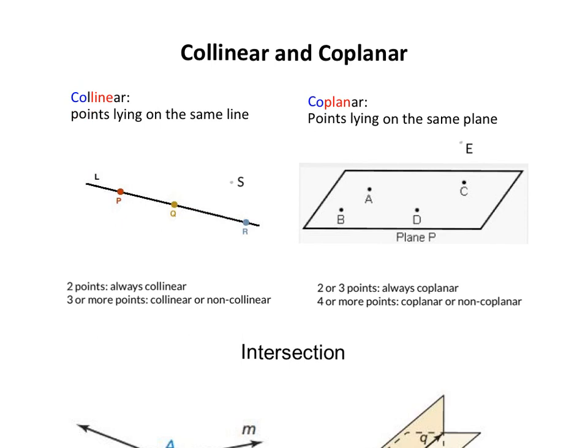On the other hand, if we add a point S that is outside this line, then we say point P, Q, S are non-collinear, or point Q, R, S are non-collinear.